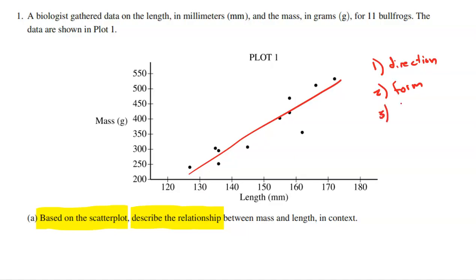As the length goes up, the masses seems to be going up at a constant rate. And the third thing we want to look for is strength. And here we're looking for how accurate these points are to that line, right? How closely do they make that direction and that form come through? And other than maybe this point right here that's a little bit off, we do see a fairly strong relationship.